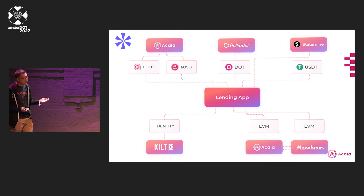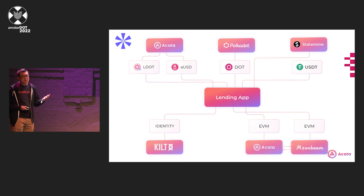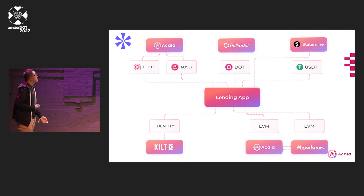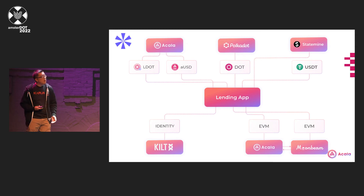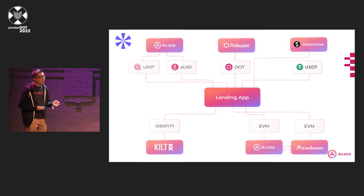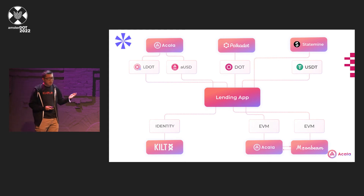Most decentralized protocols or DAOs will probably have governance features. Most of them would need some identity providers, so when people are voting on a proposal, they'll actually know who proposed it — which is quite important. We could potentially use an identity service provider like Kilt. As the application developer, we'll be able to access all these things without needing to build our own identity solutions. People shouldn't need to do that.